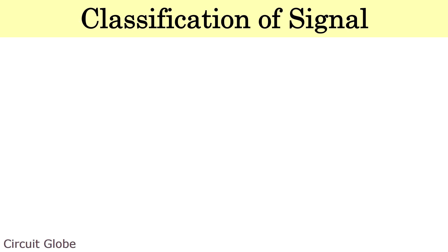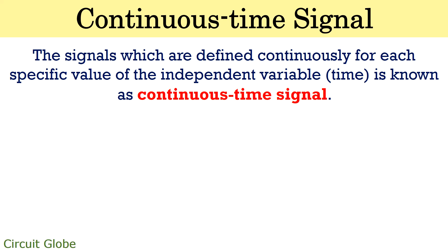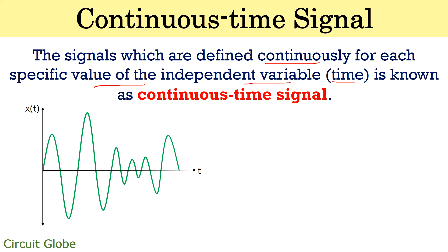Let's now proceed and see how signals are classified. Basically, signals are of two types: the first type is continuous time signal, and the second type is discrete time signal. A continuous time signal is the one which is defined continuously for each individual value of the independent variable, i.e., time. The figure shown here represents a signal whose function x(t) is varying continuously with the independent variable time — for each individual value of time we have a different value of physical quantity x(t).